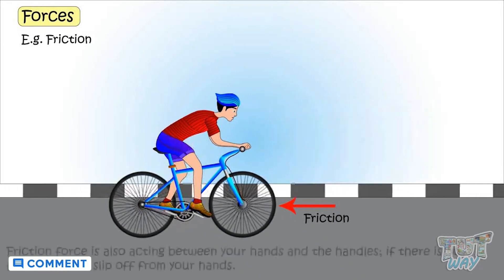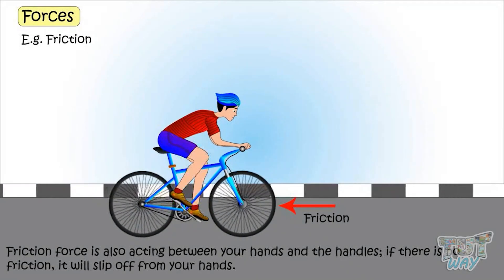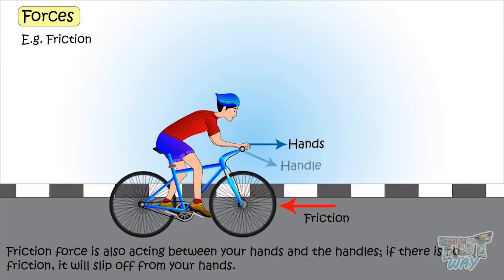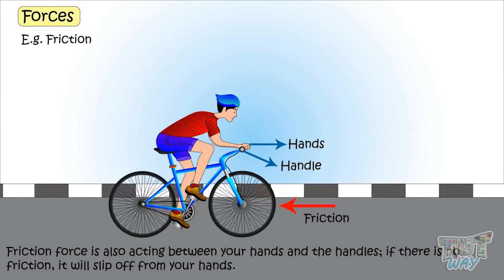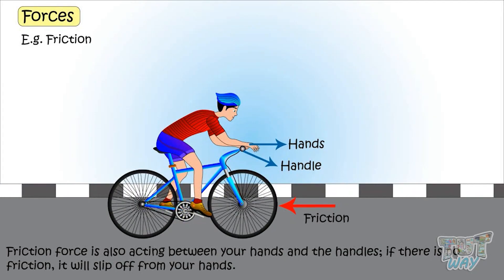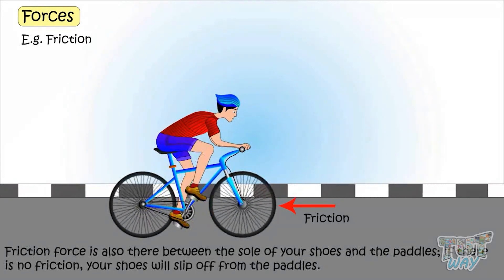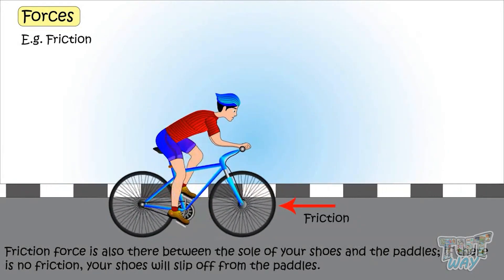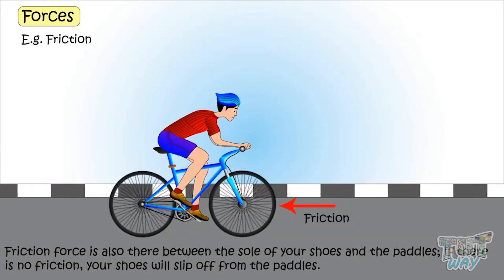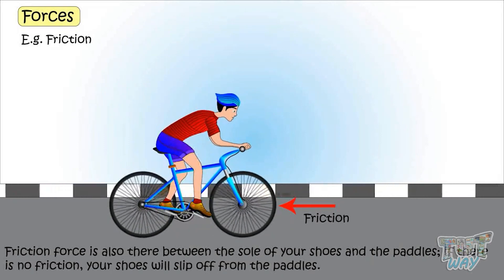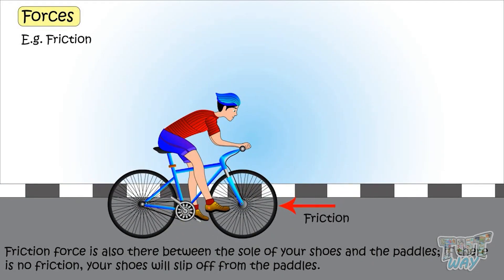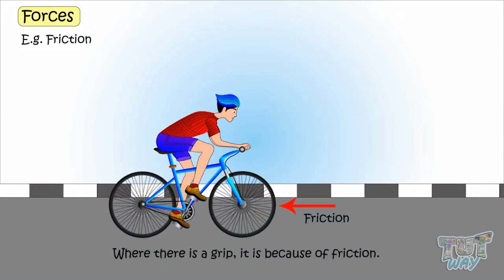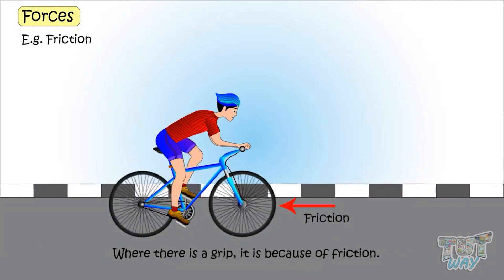Friction force is also acting between your hands and handles. Friction force is also there between the sole of your shoes and the paddles. If there would be no friction, your shoes would slip off from the paddles. Everywhere where there is a grip, it is because of the friction.